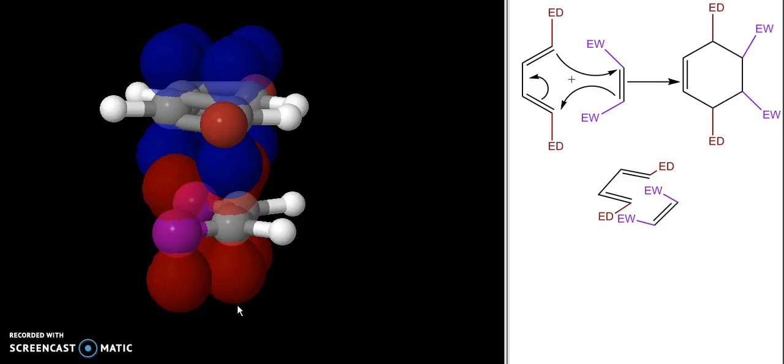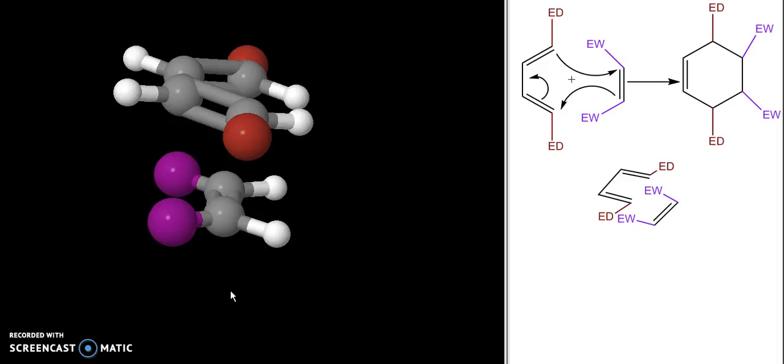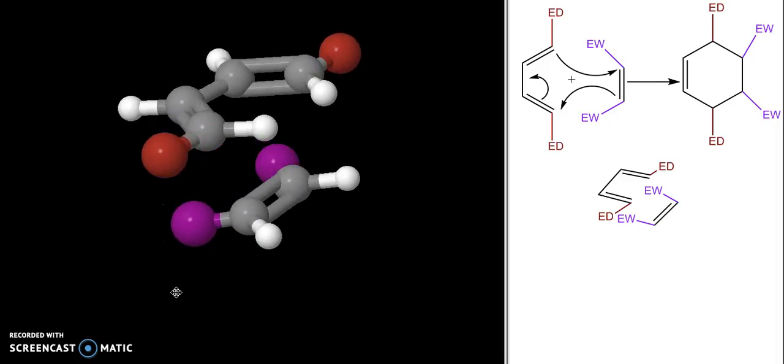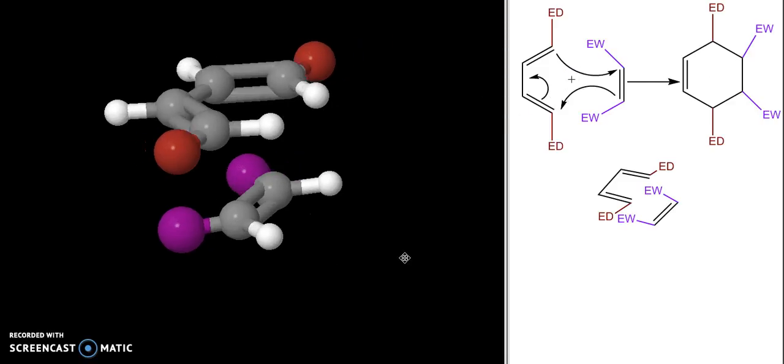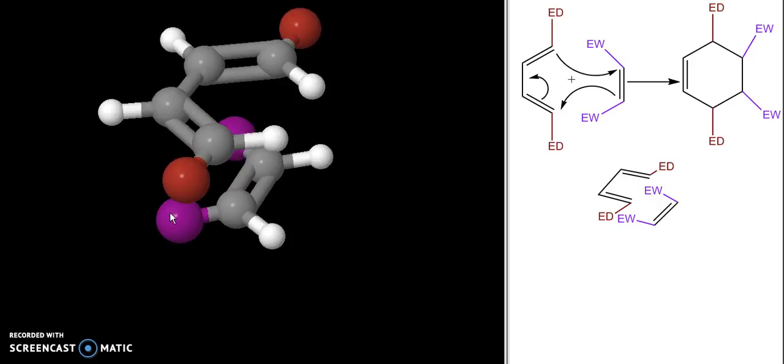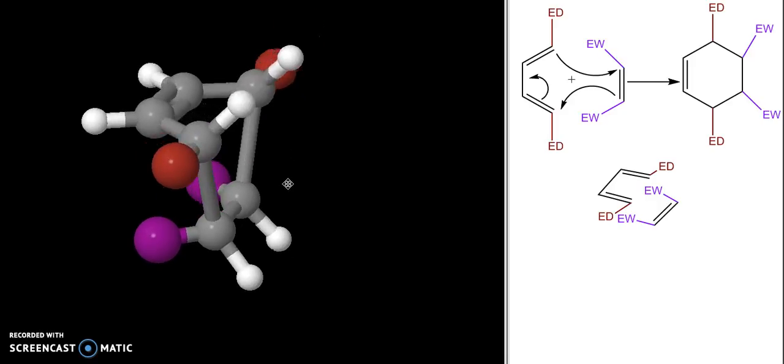Let's look at how this helps us predict the product we get. I'm going to draw in the new bonds that form. A new bond forms between this carbon and this carbon, and between this carbon and this carbon. Then we get some movement of double bonds. I'm not going to rearrange anything, I'm just going to draw in the new bonds. That's what this structure is—I've drawn in my new bonds and moved the double bond to get this.